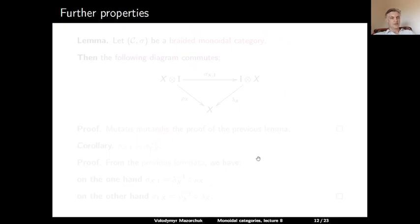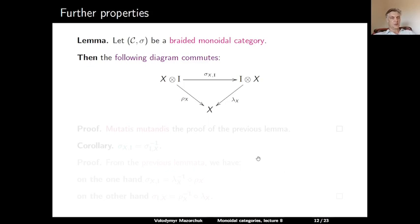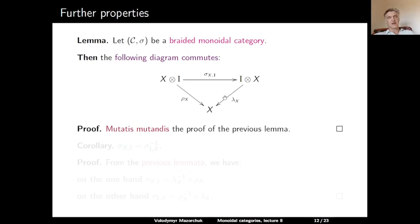Here are some further properties of braiding. Let C be a braided monoidal category with braiding sigma. Then the following diagram commutes: starting from X ⊗ I, applying sigma gives I ⊗ X; applying rho_X to X ⊗ I gives X; and applying lambda_X to I ⊗ X gives X. So the diagram commutes. This is very similar to the previous diagram and has the same proof.